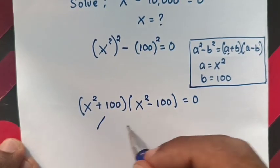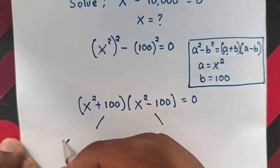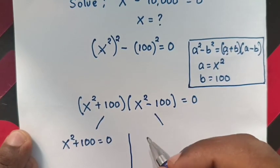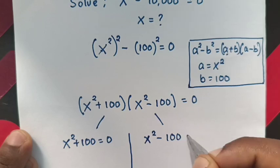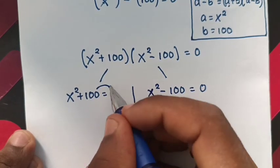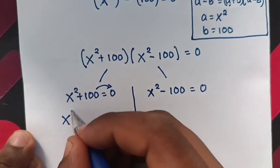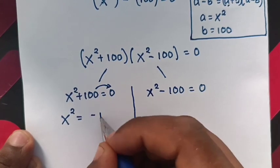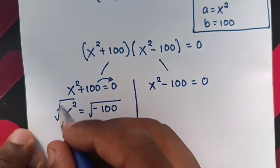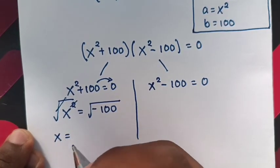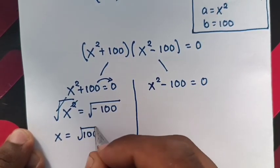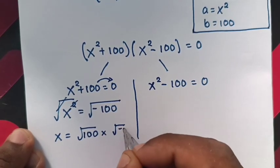Now we have two cases: Case 1 is x² + 100 = 0, and Case 2 is x² − 100 = 0. For Case 1, we take 100 to the right side, so x² equals negative 100. Then we apply the square root to both sides — the square root cancels with the square — giving x equals the square root of negative 100, which is the square root of 100 times the square root of negative 1.